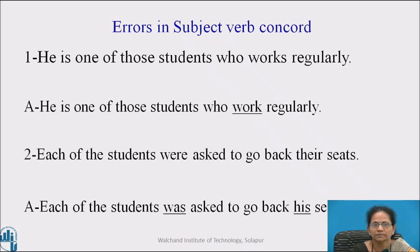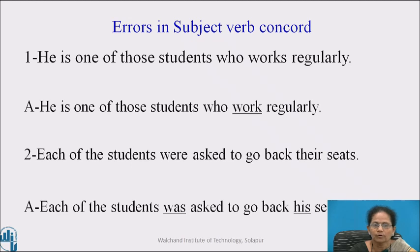Let us see some examples of errors in subject-verb concord. See the first example: 'He is one of those students who works regularly.' In this sentence, the subject is 'students,' which is in plural form. So according to the rule, if the subject is plural, the verb must also be plural. That's why the correct answer is: 'He is one of those students who work regularly.' Here, the verb 'work' is the plural form of simple present.